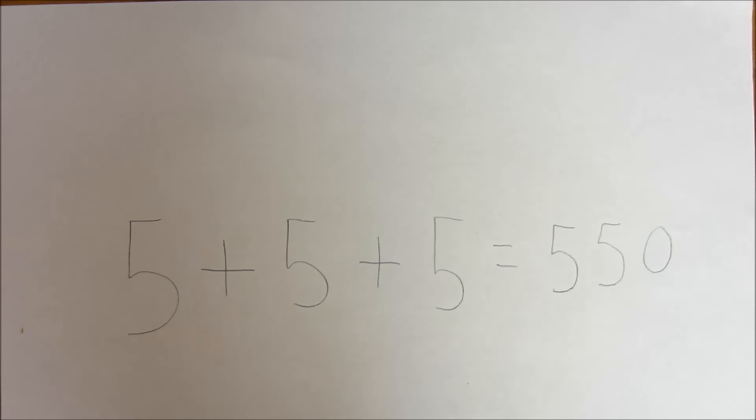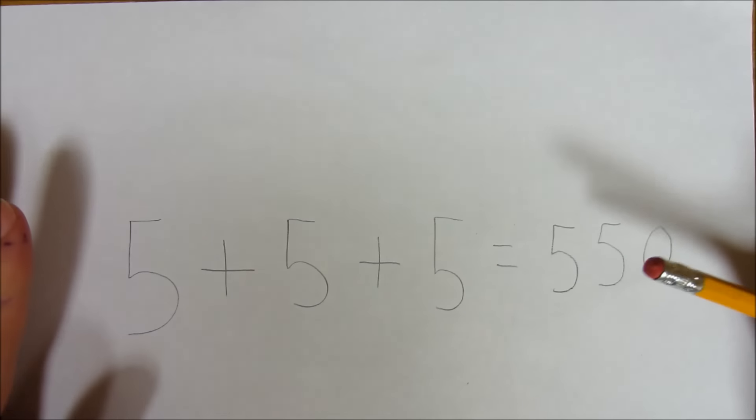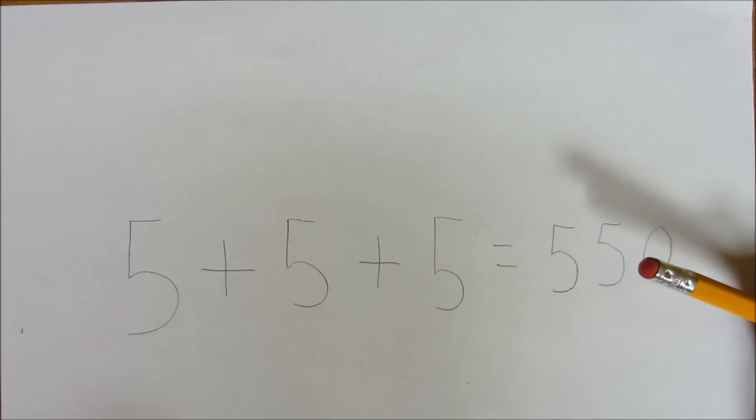Now, you're probably looking at this equation and thinking, that doesn't look quite right. 5 plus 5 plus 5 is 15. But that's the point, because this puzzle is to add one line of any length in any direction somewhere on this page so that it makes a true equation.